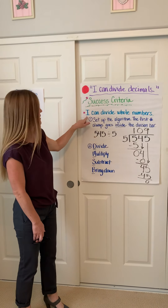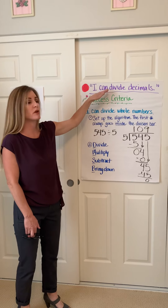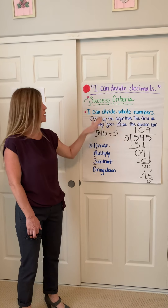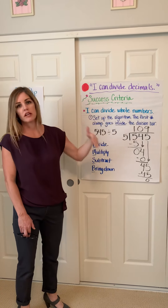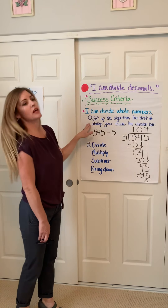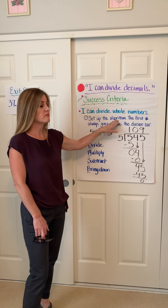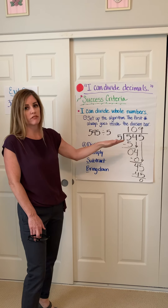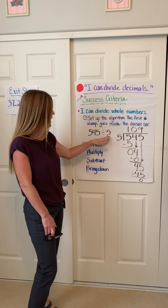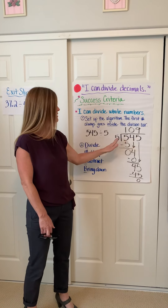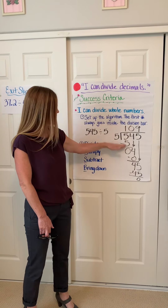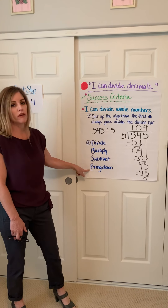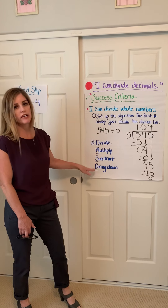Our success criteria — the main thing we have to be able to do in order to be successful with our learning target today — is I can divide whole numbers. I know for some of you this has been a bit of a challenge. I'm going to take you through the steps and then we're going to have plenty of practice together. The first thing we have to do when dividing whole numbers is set up that algorithm correctly. The first number of your problem always goes inside of that division house. You may have heard your teacher say dad, mother, sister, brother as the order: divide, multiply, subtract, and bring down.